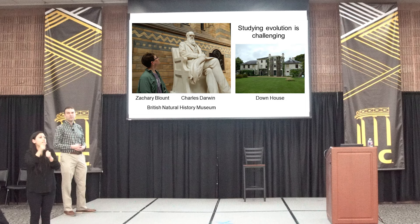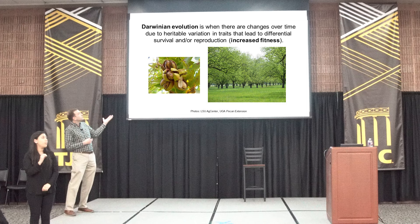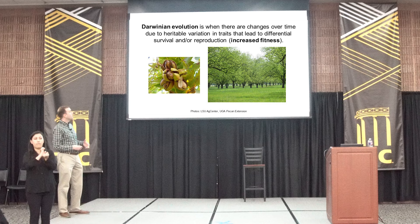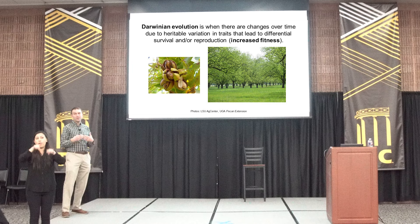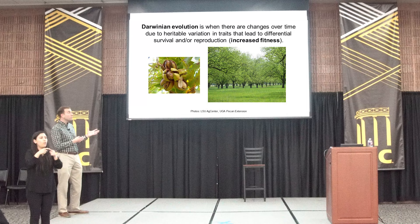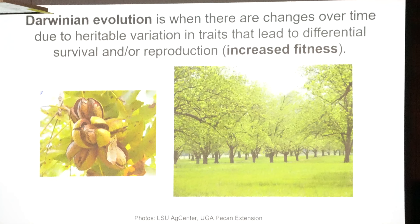We're going to talk mostly about Darwinian evolution, or evolution by natural selection. Evolution is just change over time, but for this particular kind, you need heritable variation so that offspring inherit some characteristics or mixture of genes from their parents. Some of those can lead to increased fitness or survival - how many offspring make it into the next generation. Here's our state tree, the pecan tree. One measure of its fitness might be how many pecans it makes, but it's also how many land in the right place and grow into new trees. Very hard to measure in nature.